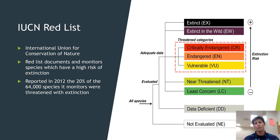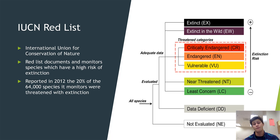As reported in 2012, around 20% of the 64,000 species monitored by the IUCN Red List were threatened with extinction. That is a terrifying number, and it reflects the sixth mass extinction event that we talked about in the previous lecture.